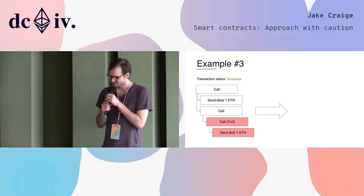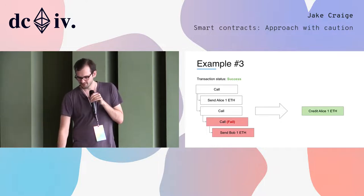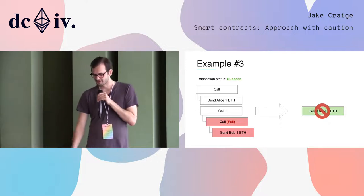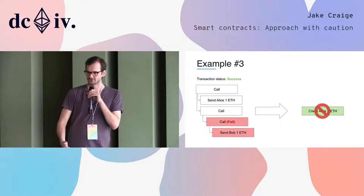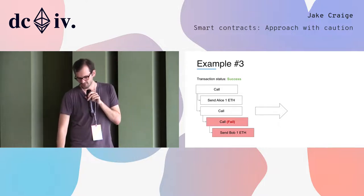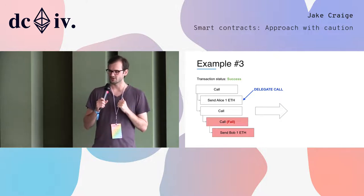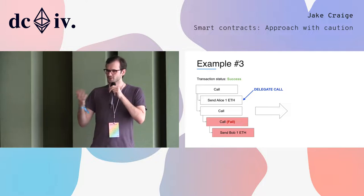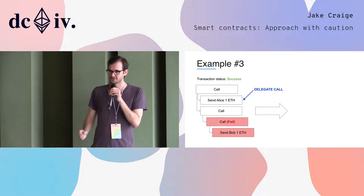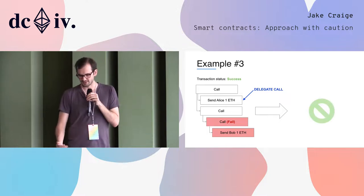The last example looks entirely the same as the previous one. If we do the same thing, we credit Alice — and that's wrong. Nobody should receive anything. There's another thing to look at: different types of calls exist, and in particular I'm using one called a delegate call. We need to identify the specific types of calls that can actually transfer Ethereum and ignore or treat others differently. A delegate call looks identical to sending Ethereum somewhere, except it doesn't actually do that. Accounting for that, we see nothing happens.